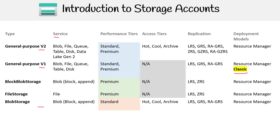For performance tiers, you're going to notice that with version one and version two, we have standard and premium. When you're using file storage and block blob storage, you're always using premium. And with blob storage, which is a legacy format, that's going to be using standard. Blob storage comes in three different types, and based on what you want to use, there'll be some variation there.